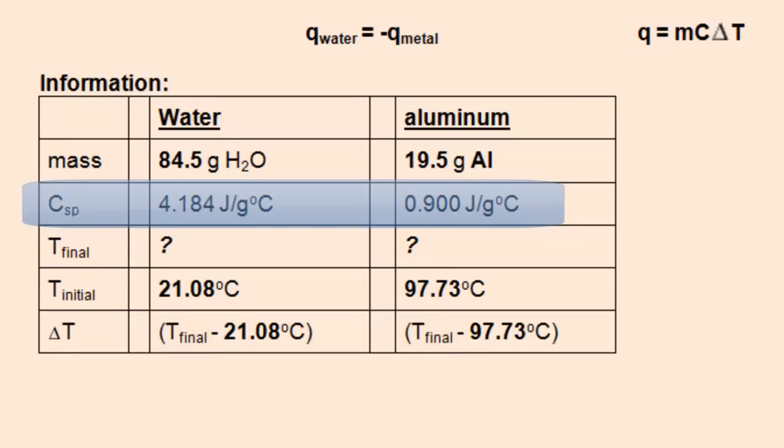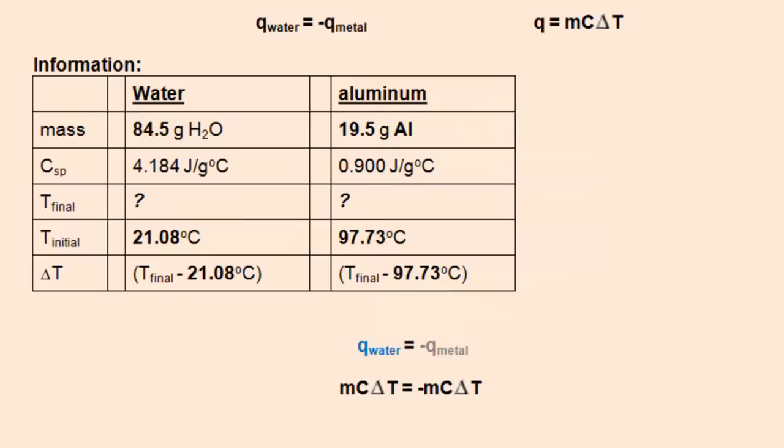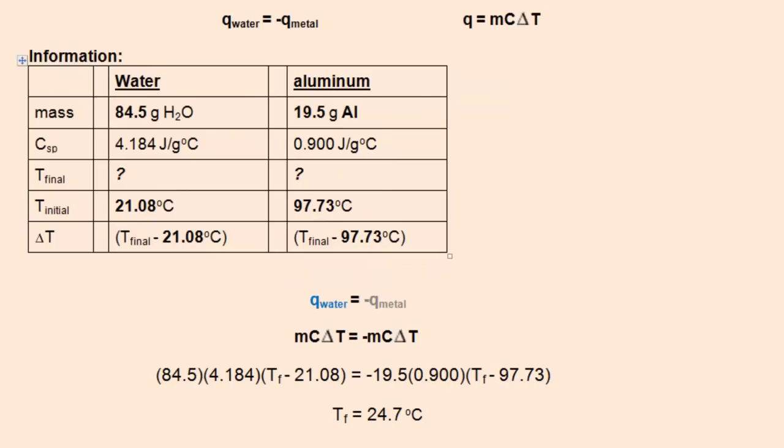The C of the specific heat can be looked up in reference tables. Now it's a matter of substituting the correct numbers into the equation. After doing so, it becomes an algebra problem to solve for T-final.